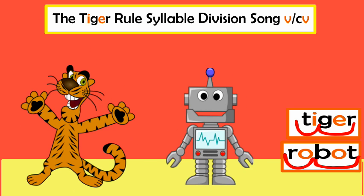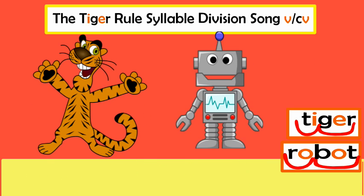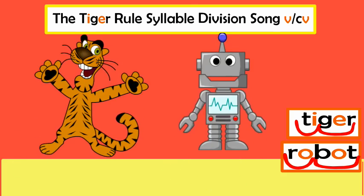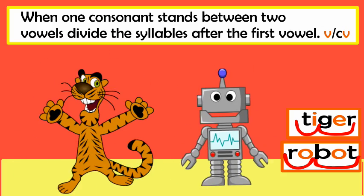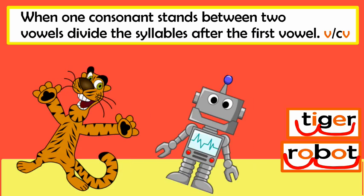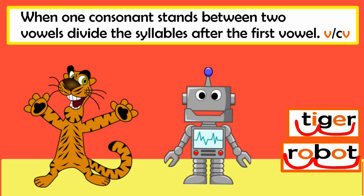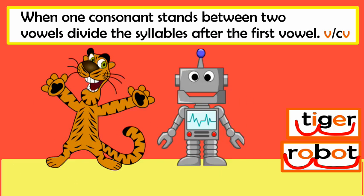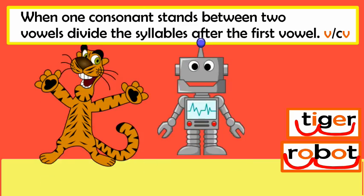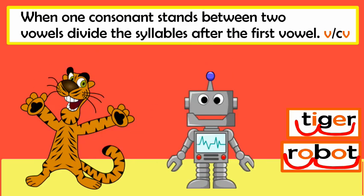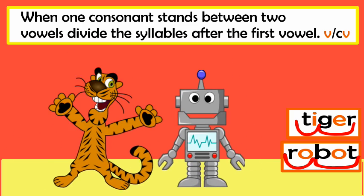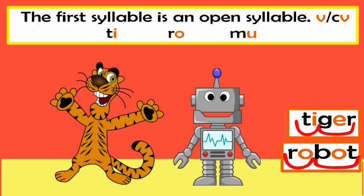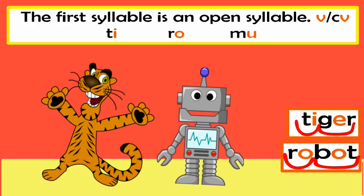Tiger rule, syllable division with the tiger rule. When one consonant stands between two vowels, divide the syllables after the first vowel.